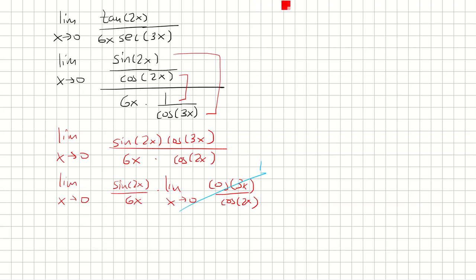And the goal to solve the first limit is to rewrite 6x as 3 times 2x, but the 3 is going to come outside as 1 third, because 3 times 2x is 6x.